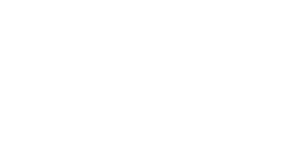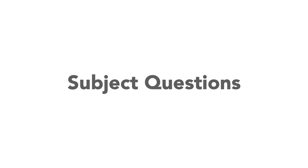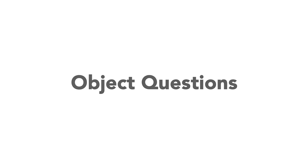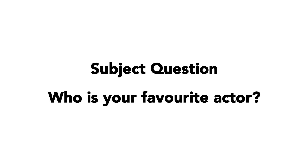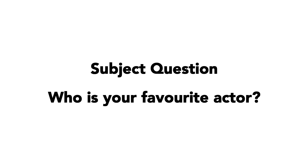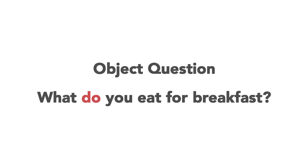We use WH questions to ask for information. For example, what is your name? There are two types of WH questions: subject questions and object questions. An example subject question is, who is your favorite actor? An example object question is, what do you eat for breakfast?